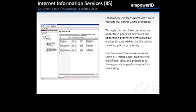Our Empower ID Windows services serve as traffic cops to direct workflows, jobs, and processes to the appropriate application pool for processing. We then let IIS take care of managing the worker threads, processor, and memory, because Microsoft has proven they are very adept at managing server resources from a web server point of view.